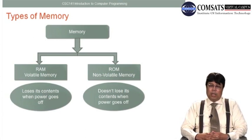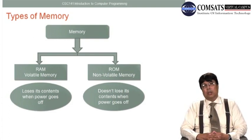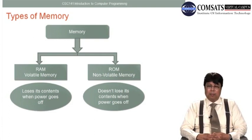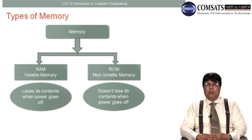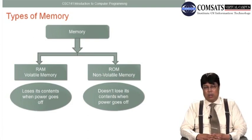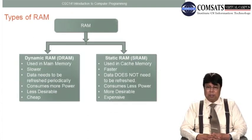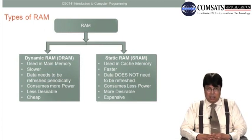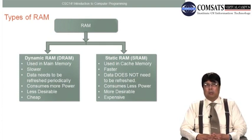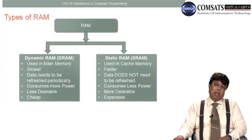Static RAM is used in the cache memory. It is faster than Dynamic RAM, and the data does not require to be refreshed — that's why we call it static RAM. It consumes less power and is more desirable than Dynamic RAM due to these features. Anything which has more desirable features is expensive, so Static RAM is expensive compared to Dynamic RAM.